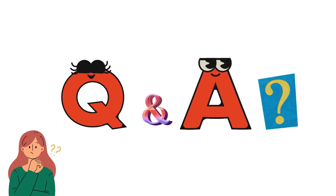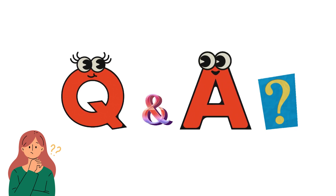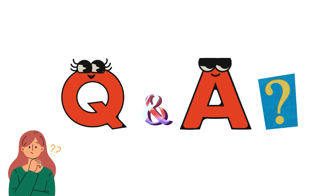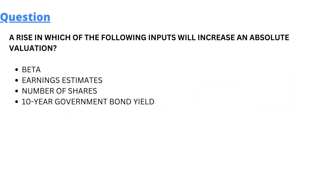For today, our question is: a rise in which of the following inputs will increase an absolute valuation? It means which of the four options below can increase the valuation of any company. The options are: (a) Beta, (b) Earnings estimates, (c) Number of shares, (d) 10-year government bond yield.